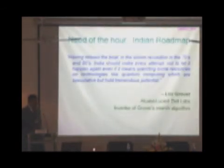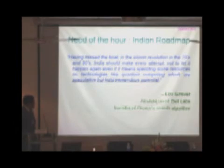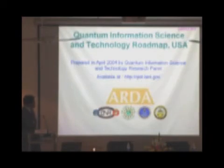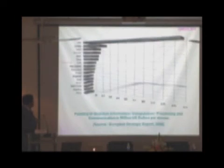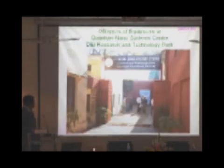The need of the hour is to have an Indian roadmap. Lov Grover said that having missed the boat in the silicon revolution in the 70s and 80s, India should make every attempt not to let it happen again, even if it means spending some resources on technologies like quantum computing which are speculative but hold tremendous potential. The USA has its Quantum Information Science and Technology roadmap prepared in April 2004. Europe has its own Quantum Information Processing and Communication strategic report, a pan-European effort to position Europe as a world leader. Canada has Quantum Works Canada. India is placed somewhere in the middle in terms of funding, and if India is to develop this technology, we should move up.